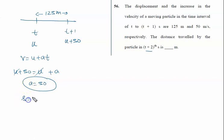Then we use the second equation s = ut + half at squared. The value of s is 125 meters, time interval is 1 second, plus half acceleration is 50, and 1 squared is 1. So 125 = u + 25, therefore u is 100 meters per second.